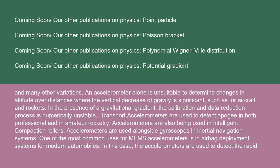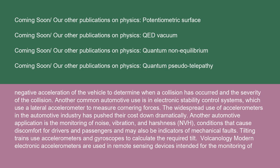One of the most common uses for MEMS accelerometers is in airbag deployment systems for modern automobiles, where they detect the rapid negative acceleration of the vehicle to determine when a collision has occurred and the severity of the collision. Another common automotive use is in electronic stability control systems, which use a lateral accelerometer to measure cornering forces. The widespread use of accelerometers in the automotive industry has pushed their cost down dramatically. Another automotive application is the monitoring of noise, vibration, and harshness (NVH) conditions that cause discomfort for drivers and passengers and may also be indicators of mechanical faults.